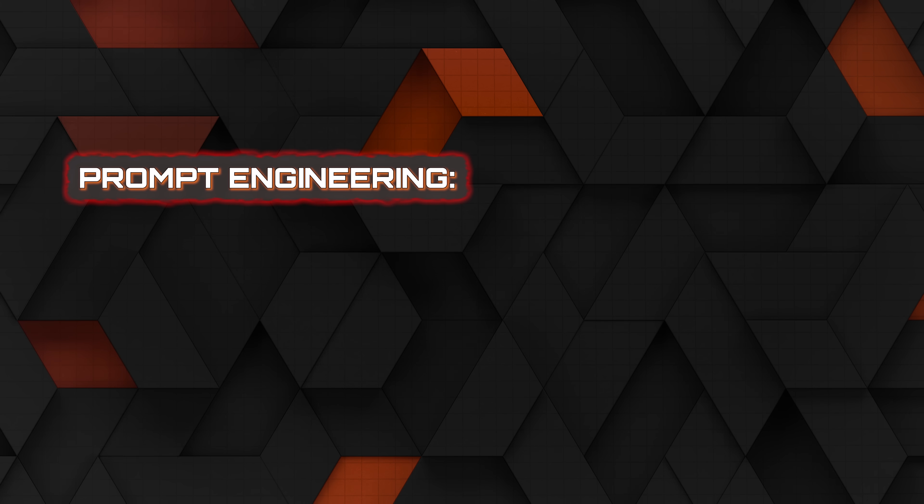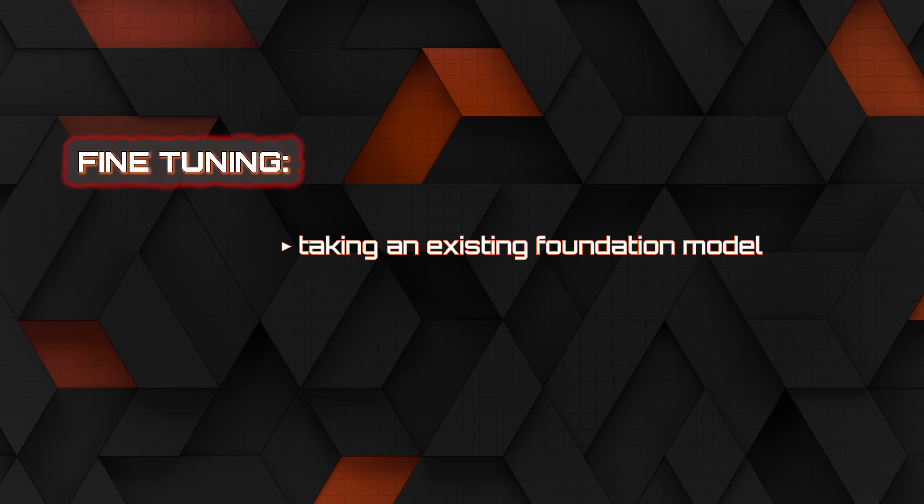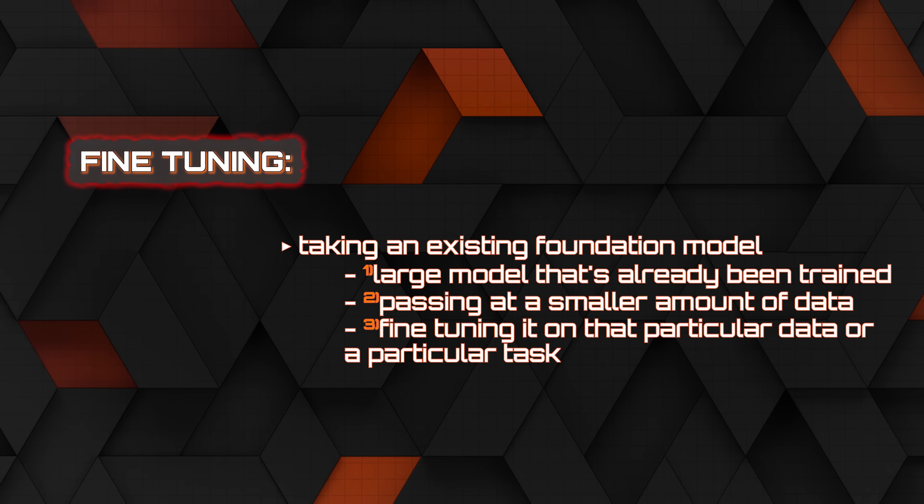The next topic is advanced LLM skills. Once you know how to use LLMs on a simple level and within some of these frameworks, you need to move on to more advanced topics. First is prompt engineering — how do you create the best prompts and reliably get an LLM to act the way you want? Then we have fine-tuning, which involves taking an existing foundation model — a large model that's already been trained — and passing it a smaller amount of data to fine-tune it on a particular task. For example, taking a smaller open-source model like Mistral and passing it 10,000 examples of hockey information so it can predict specifically based on that data. You can essentially bias these models and pass them information to fine-tune them, giving significantly better results in a particular task with limited training data.